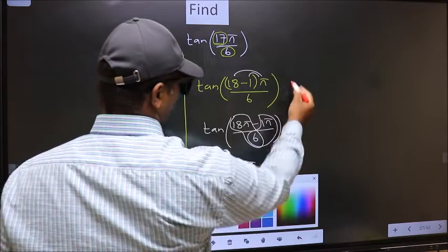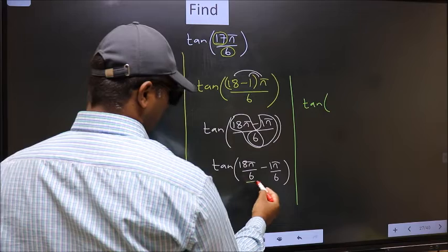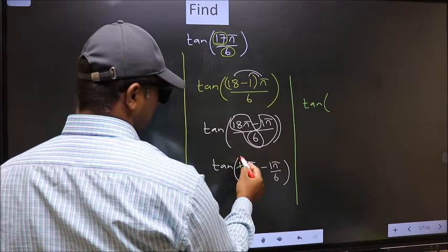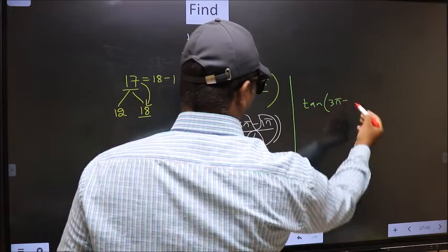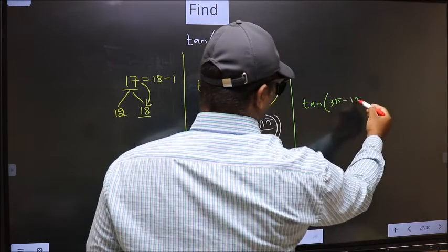Next, tan. Over here you should cancel 6 1s, 6 3s. So we get 3π minus this no change, 1π by 6.